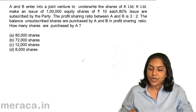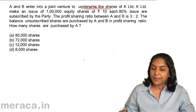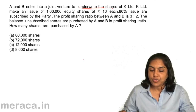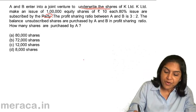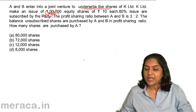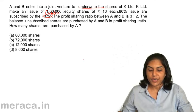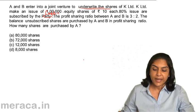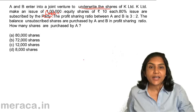A and B enter into a joint venture to underwrite the shares of K Limited. K Limited made an issue of 1 lakh equity shares of ₹10 each. 80% of the issue is subscribed by the public. The profit sharing ratio between A and B is 3:2. The balance unsubscribed shares are purchased by A and B in the profit sharing ratio. How many shares are purchased by A? Before we move on, let us have a quick understanding of what underwriting of shares means.